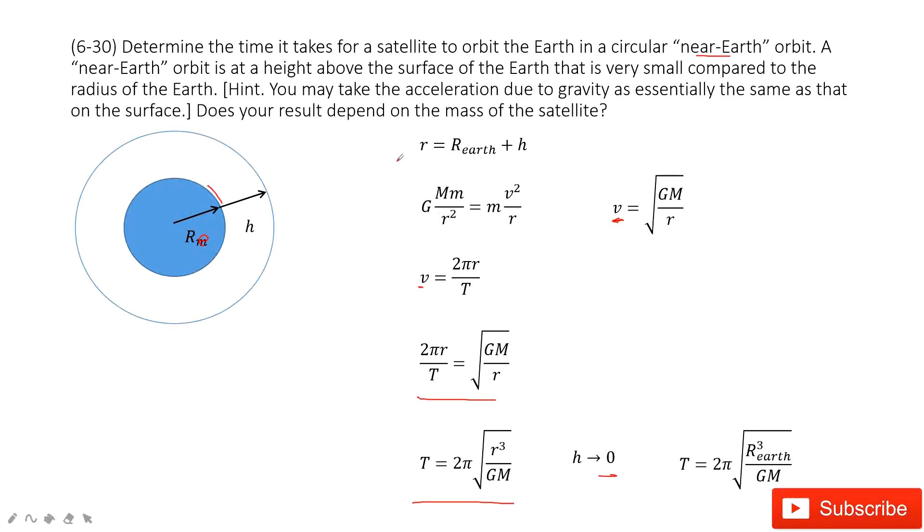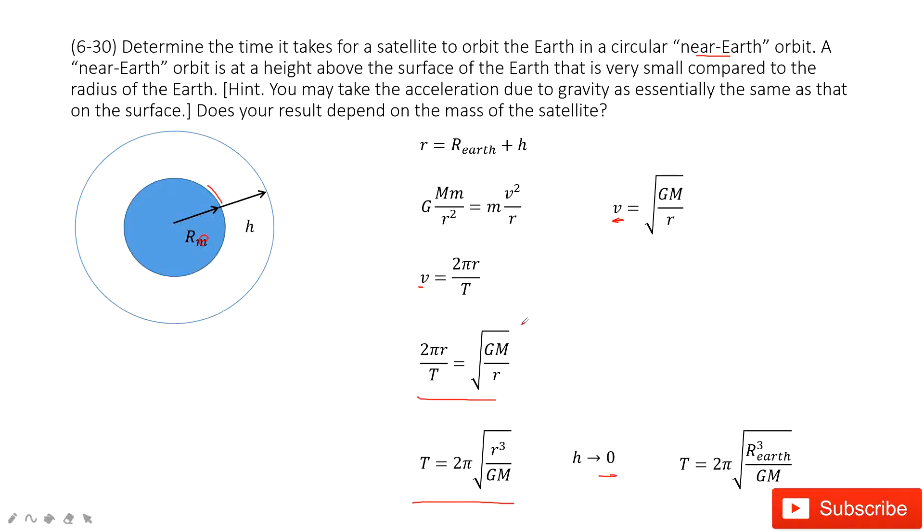So this r becomes the radius of the Earth. This is one way we take the limit. And then after that, we can input the known quantities. We find the answer is 5070 seconds equals 84.5 minutes.